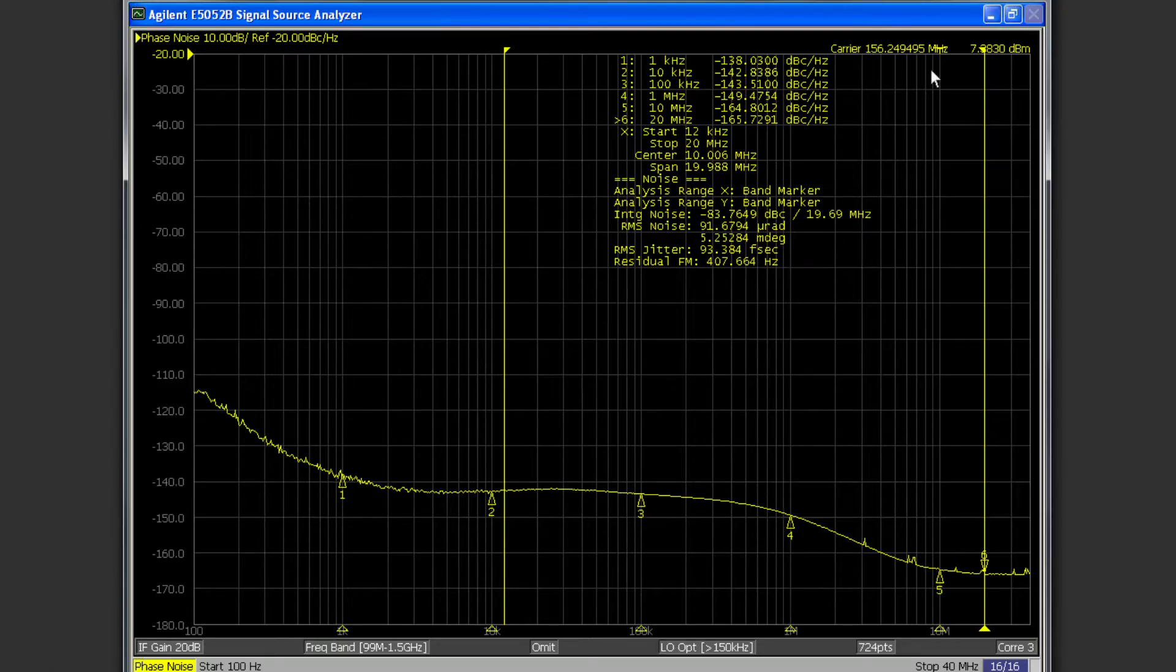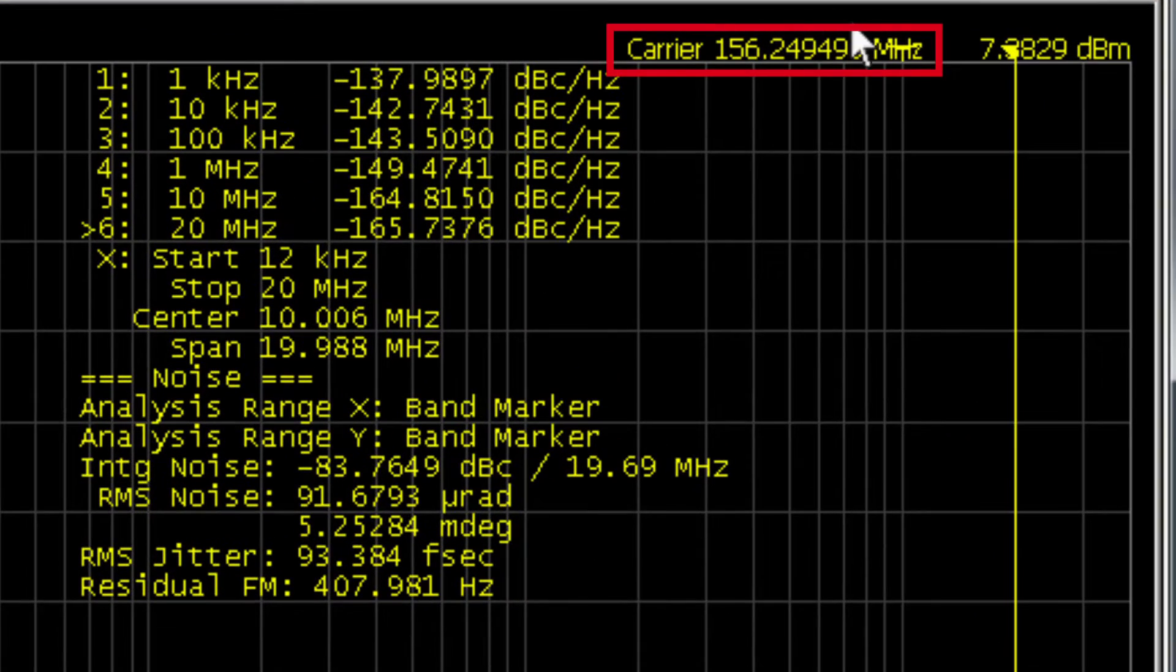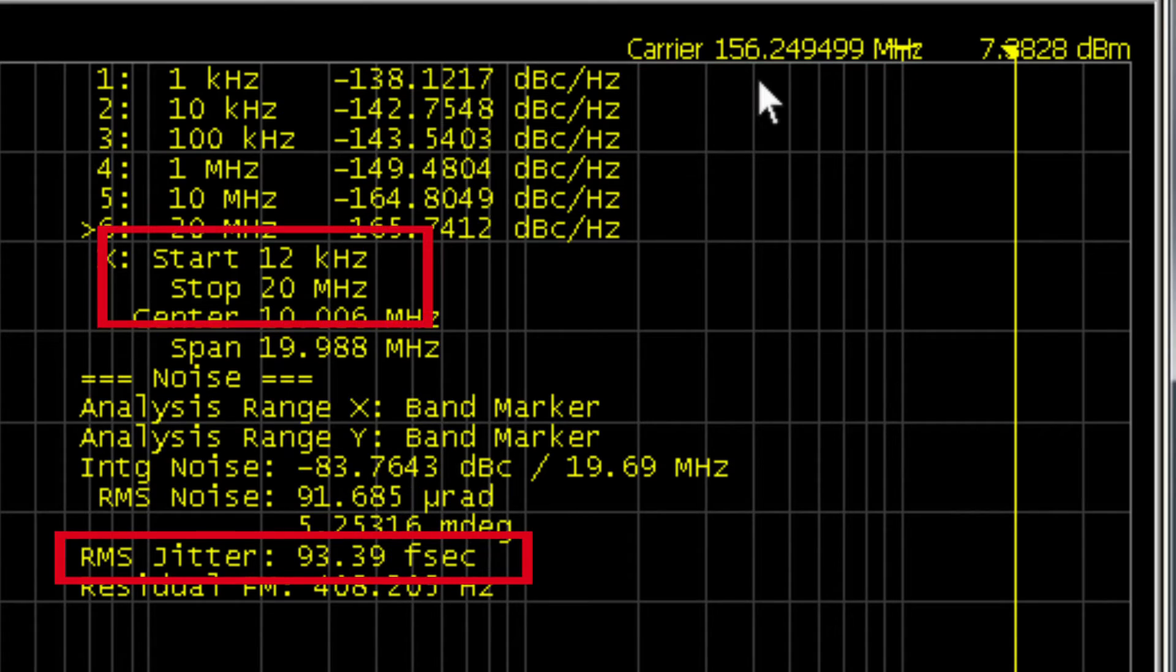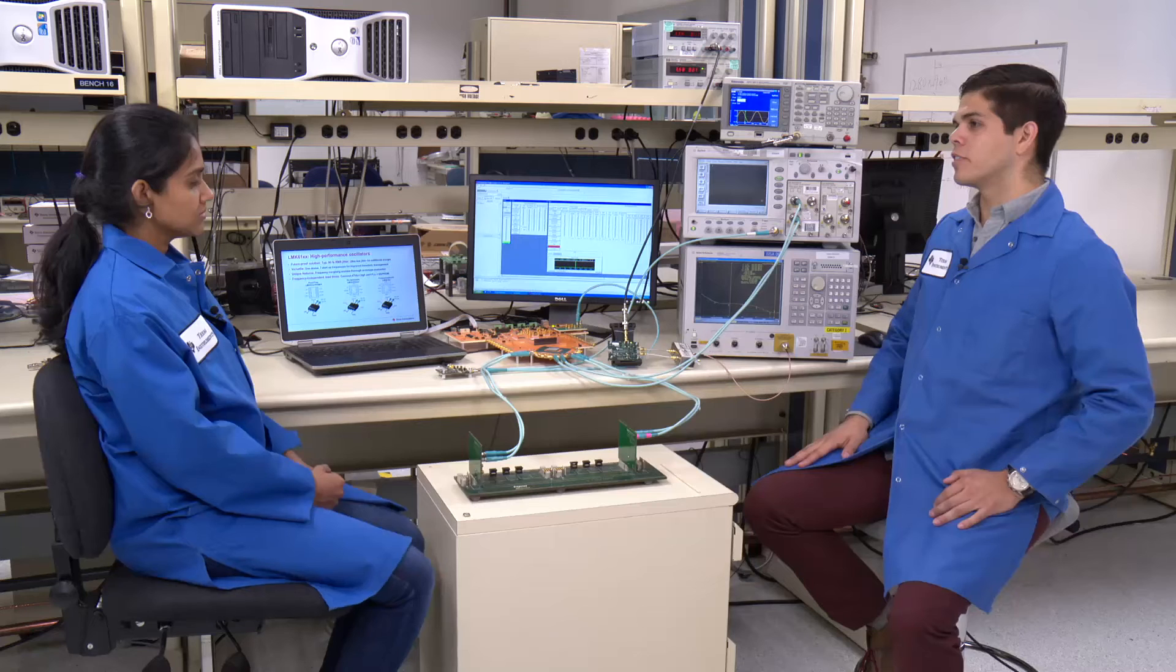As you see here, we have our 156.25 MHz carrier with a 93 femtosecond performance between 12 kHz and 20 MHz. Let's look at a second experiment.